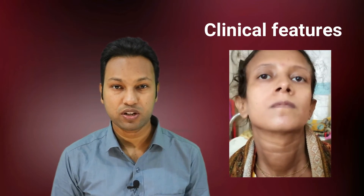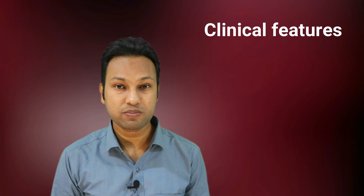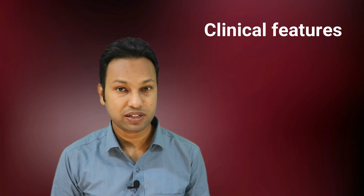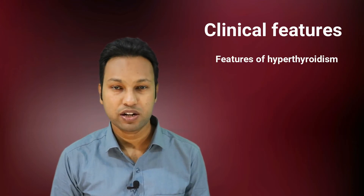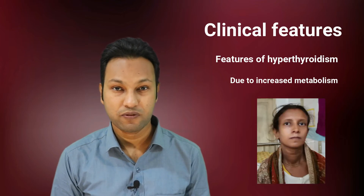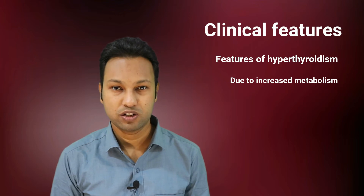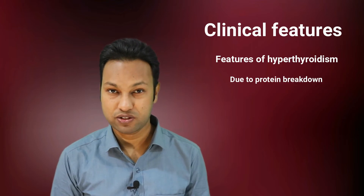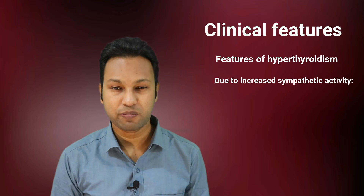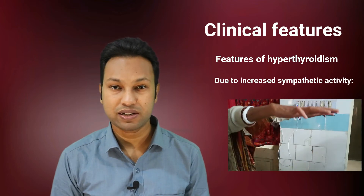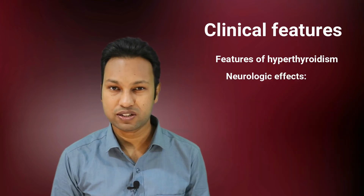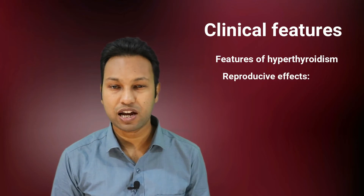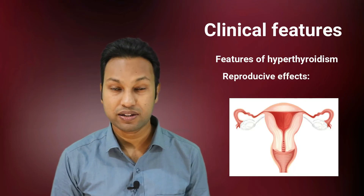Regarding clinical features, the peak incidence is in the 20s and 30s, but it can affect any age group. Females are affected 5 to 10 times more than their male counterparts. Features of hyperthyroidism are due to increased metabolic rate: weight loss, fatigue, sweating, heat intolerance, weakness and thinning of hair. Due to increased sympathetic activity there is palpitation, tachycardia, and tremor. Neurologic effects include increased deep tendon reflex and nervousness. Reproductive effects are abnormal menstrual cycle and decreased libido.